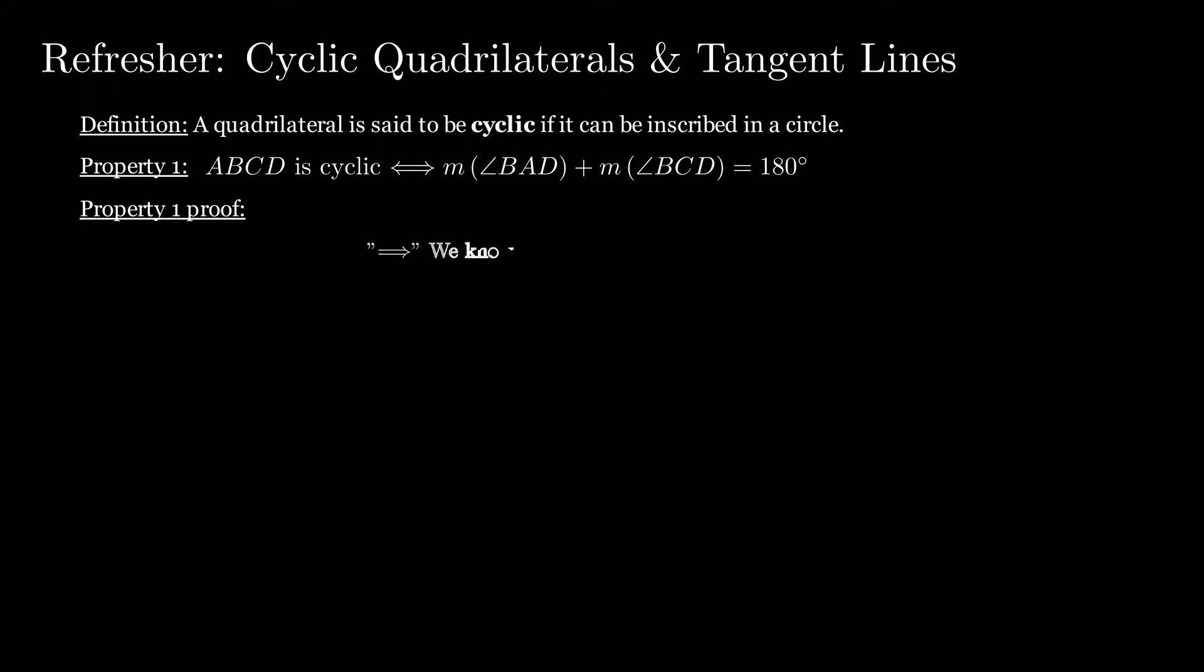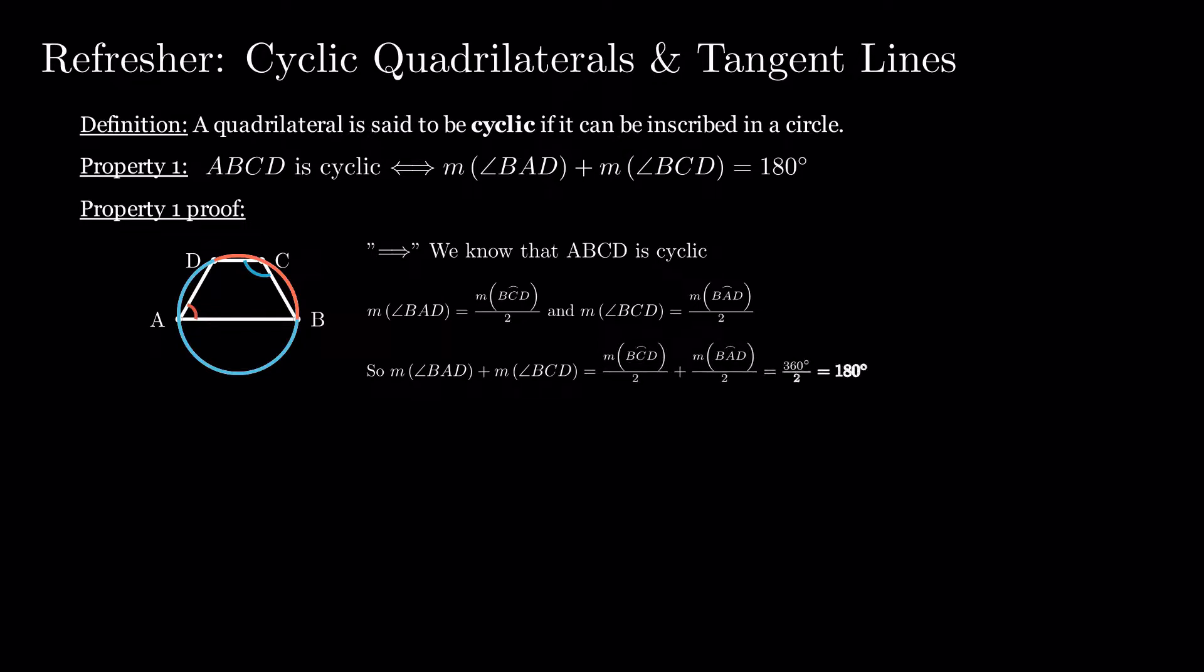Let's prove this starting with the forward direction of the implication. We know that ABCD is cyclic. Thus, angle BAD's measure is half of the measure of arc BCD. Respectively, angle BCD's measure is half of the measure of arc BAD. Summing them up, their sum is half of the total measure of the circle, which gives us 180 degrees.